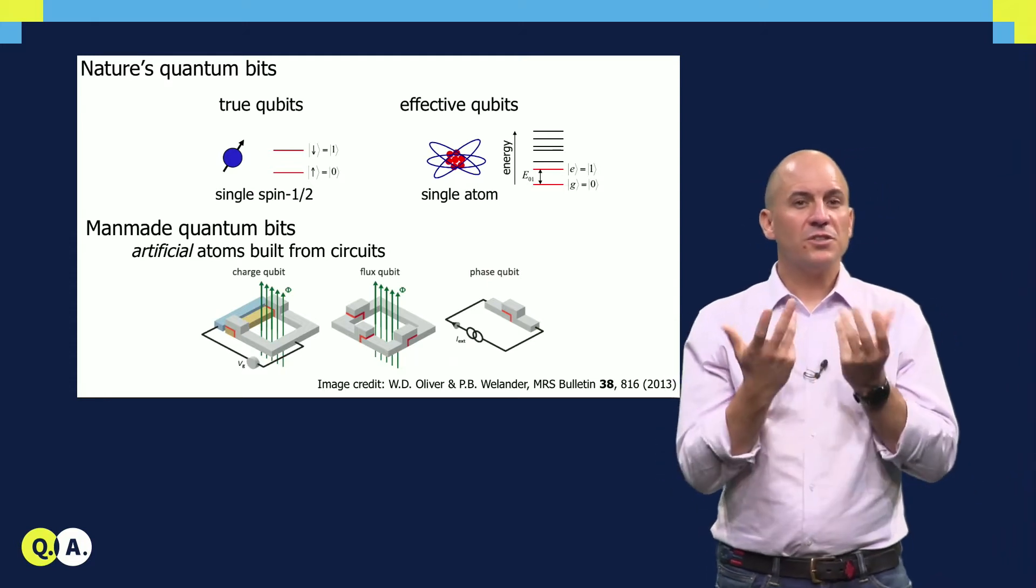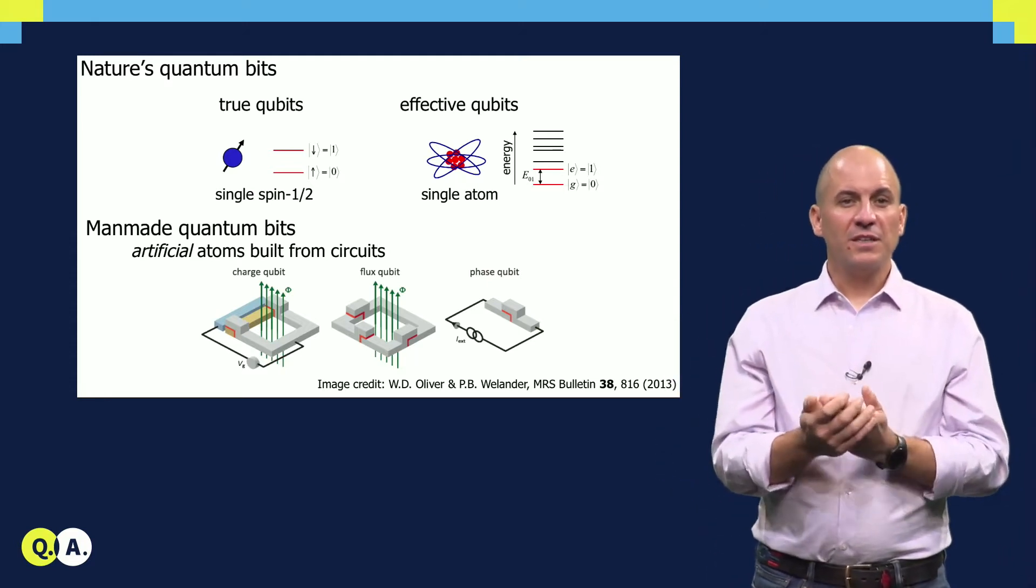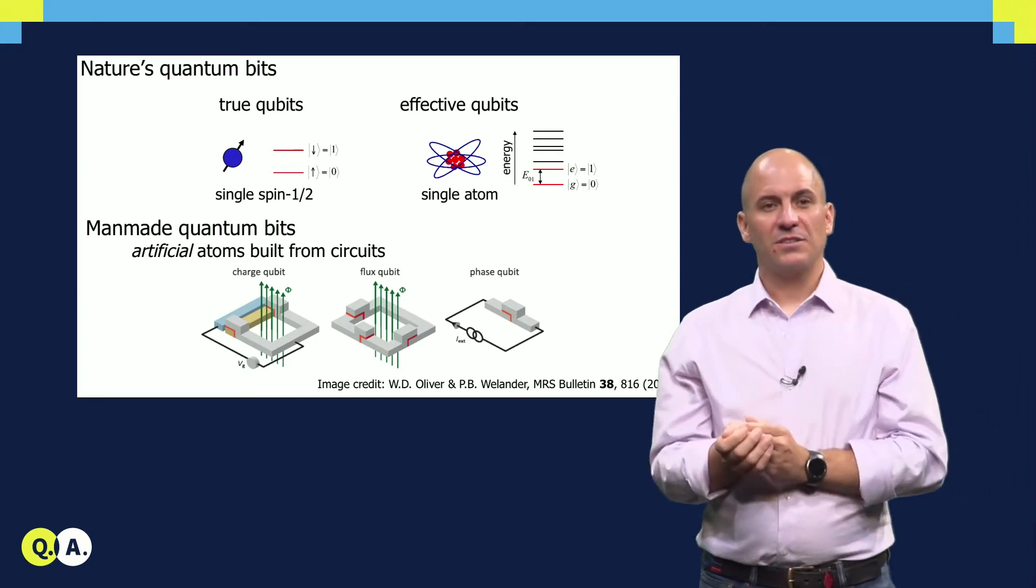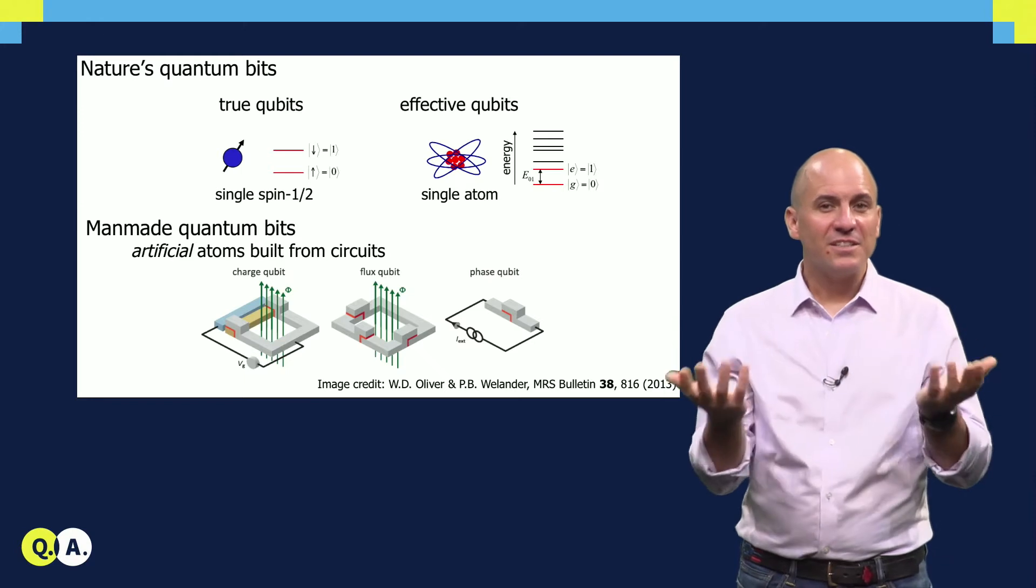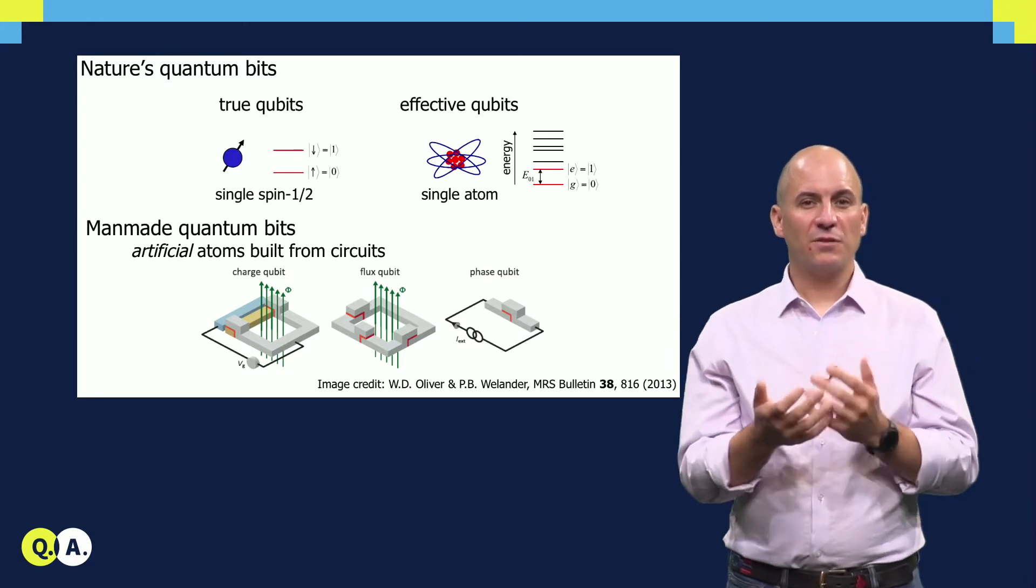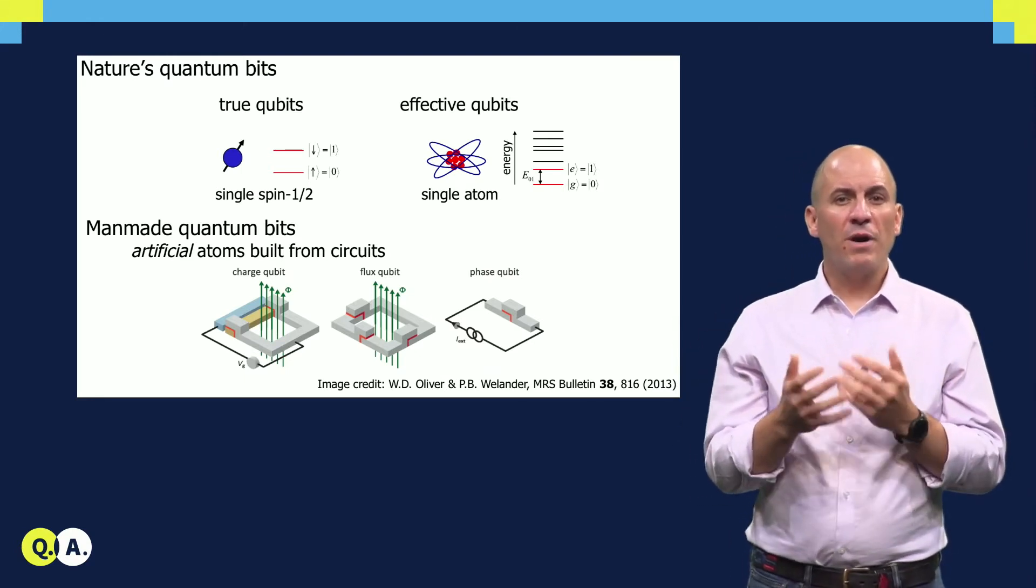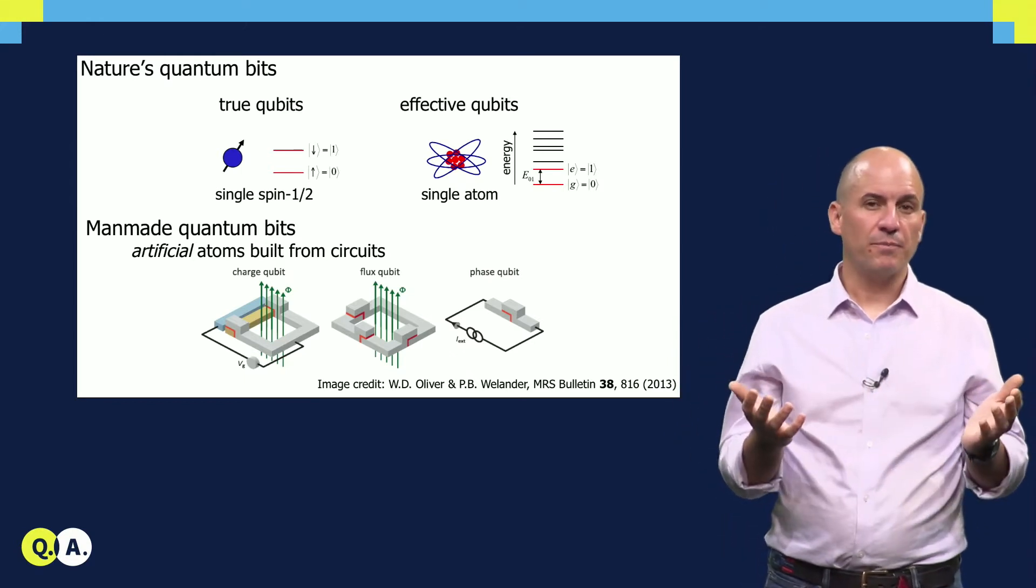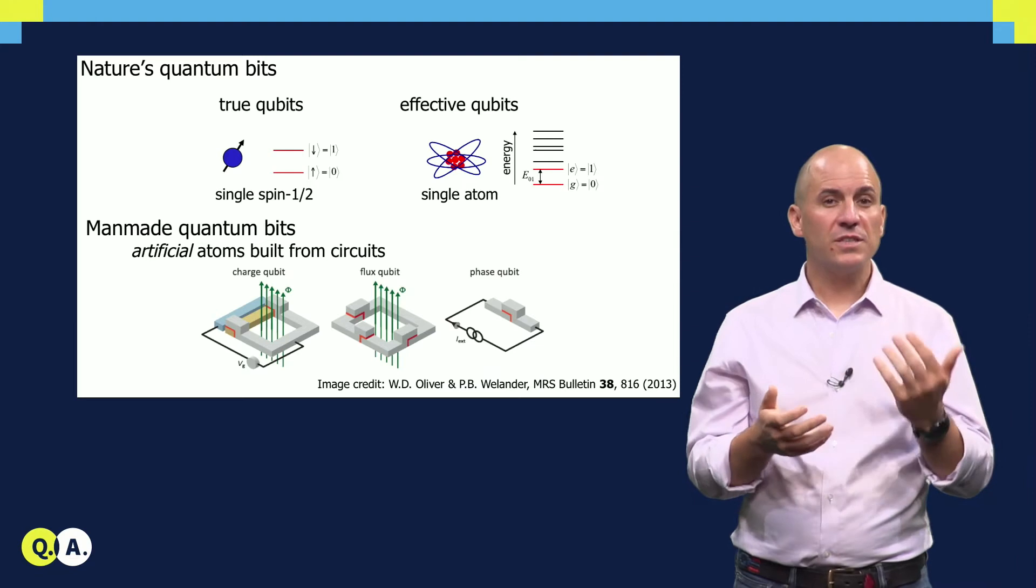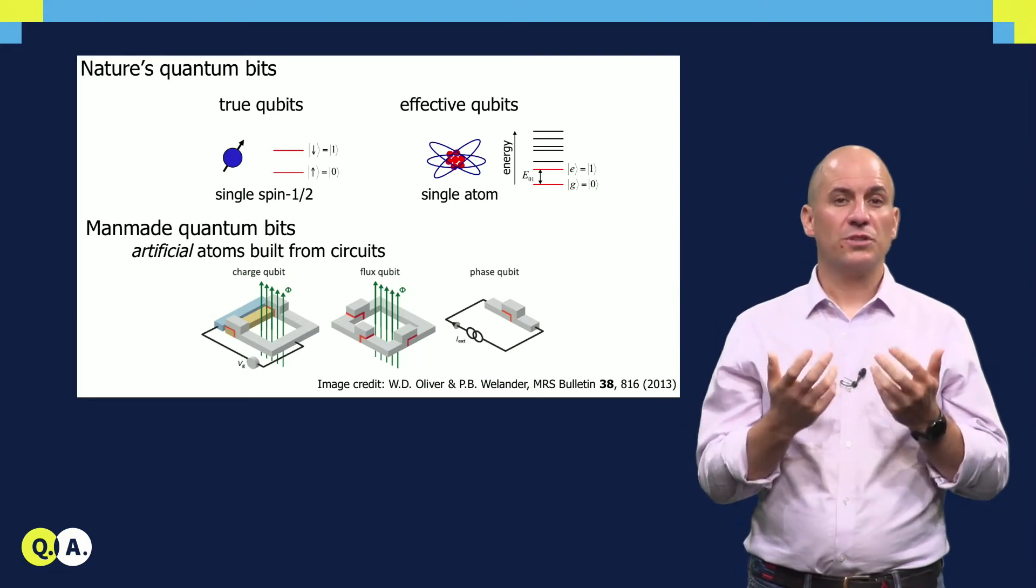Second, these qubits are circuits that we fabricate ourselves. This has advantages and disadvantages. On the bright side, we have freedom to design. In a sense, we can play God designing artificial atoms. However, fabrication uncertainty keeps us from making any two qubits the same. For this reason, we like to say that qubits have individual personality.